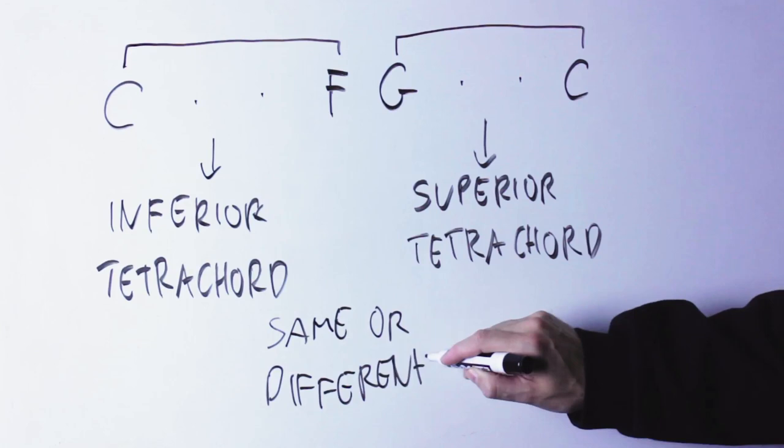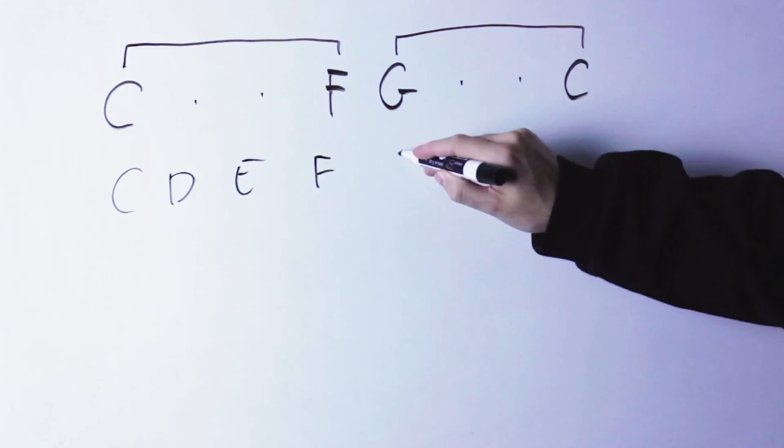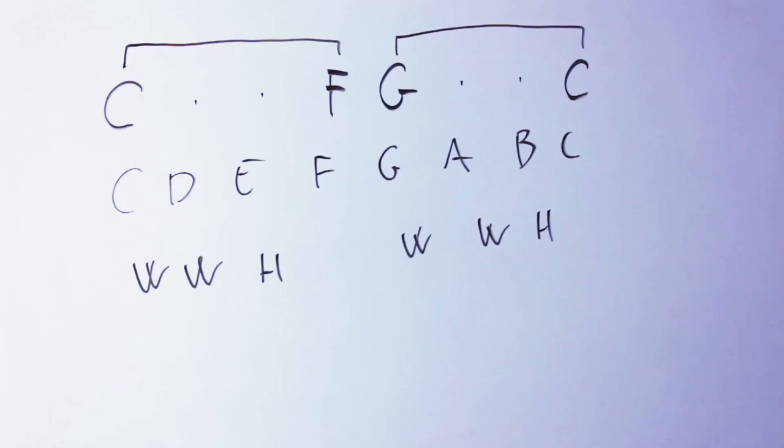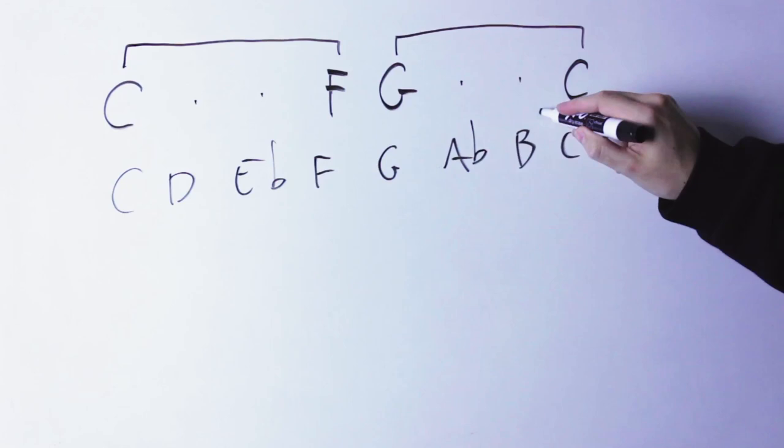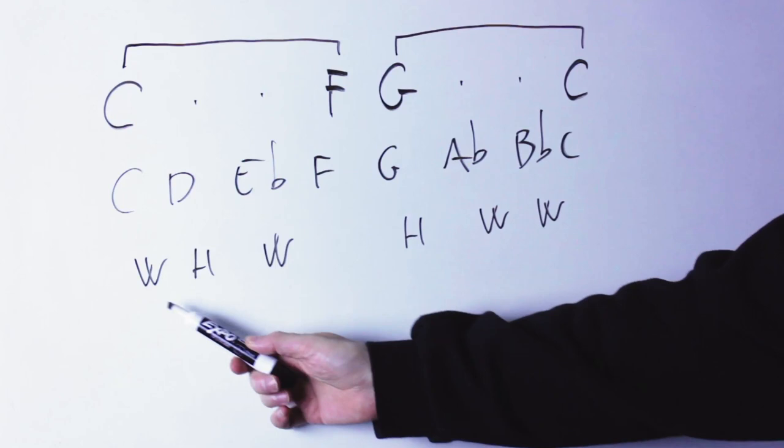So, for instance, in the major scale, the two tetrachords are the same, because the intervals are a whole step, a whole step, and then a half step in the first tetrachord, and a whole step, a whole step, and a half step in the second tetrachord. But in other scales like the natural minor scale, the two tetrachords are not the same, and in fact in the natural minor scale, the intervals are whole half whole for the inferior tetrachord, and half whole whole for the superior tetrachord.